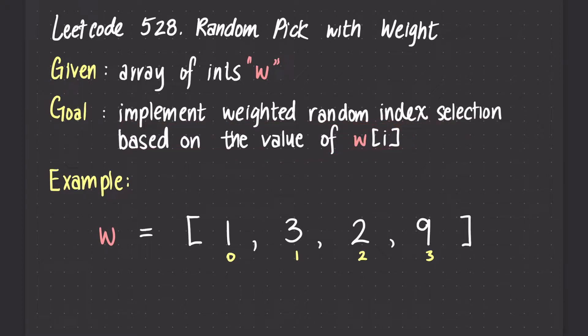Here is an example. If w were the following array, in total we have the sum of 15. Index 0 would have 1 out of 15 chance of being picked. Index 1 would have 3 out of 15 chance to be picked. Index 2 would have 2 out of 15 chance to be picked. Index 3 would have 9 out of 15 chance to be picked.